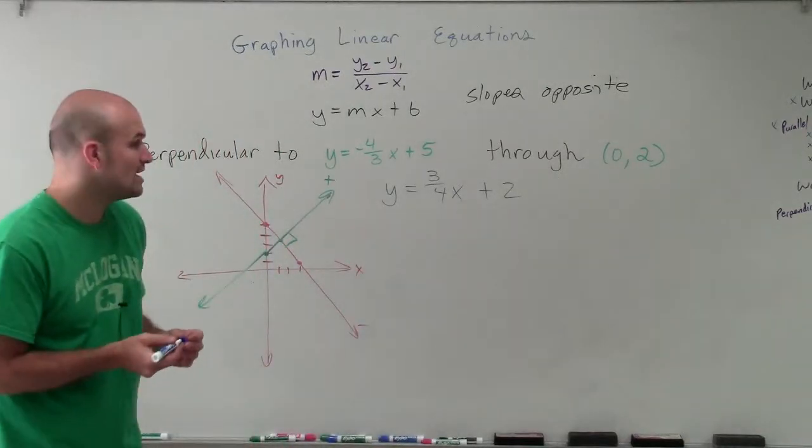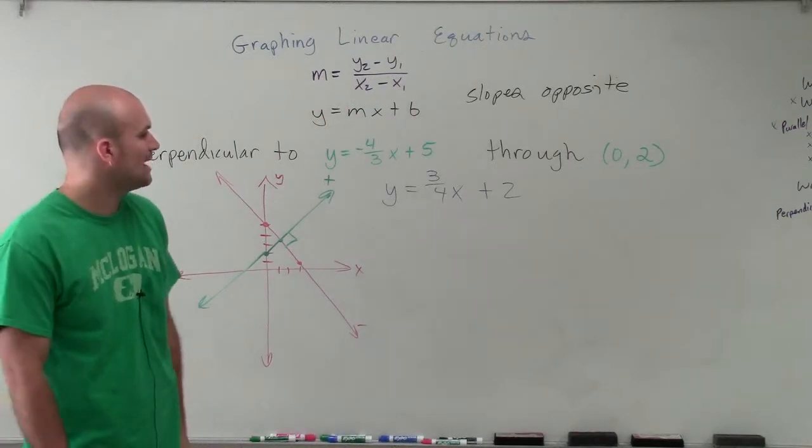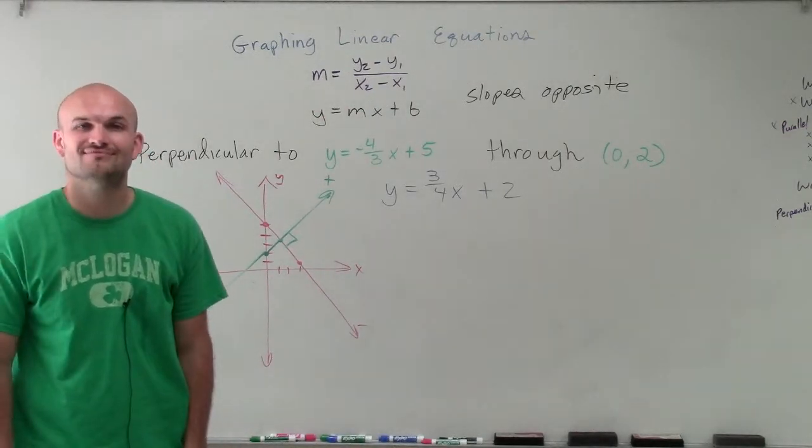And that is going to be your equation of your line that goes through the point 0 comma 2 that is perpendicular to the equation y equals negative 4 thirds x plus 5. Thanks.